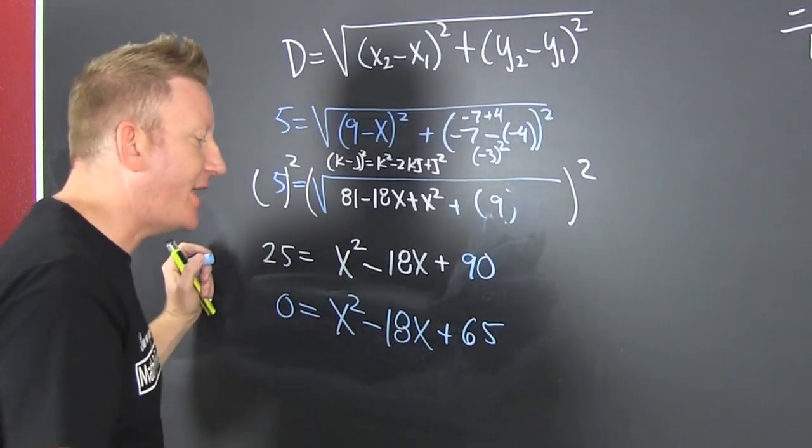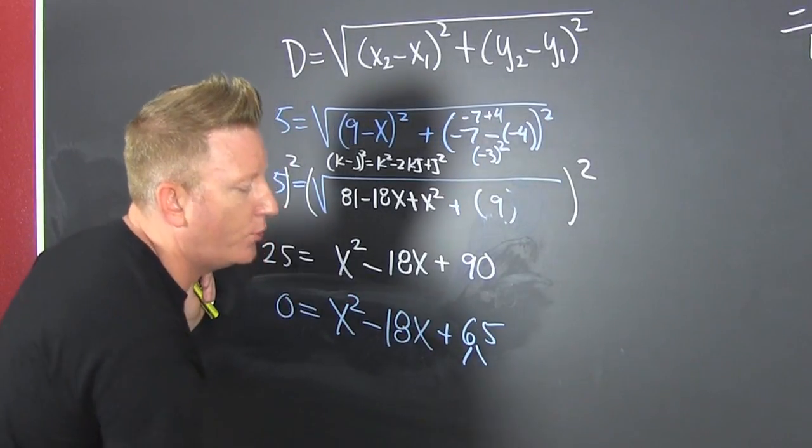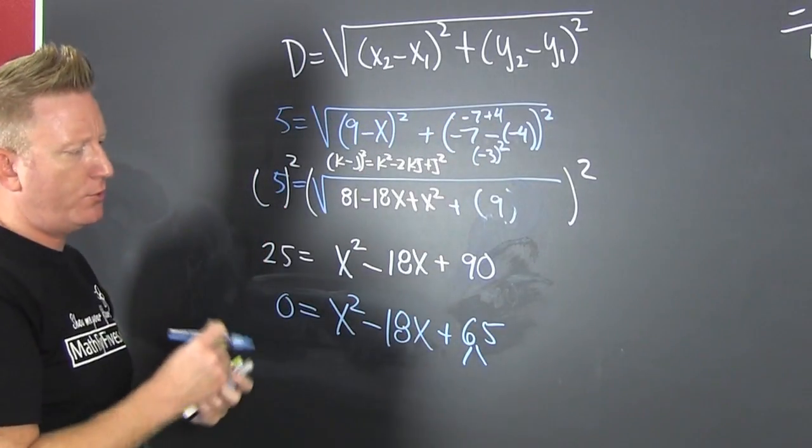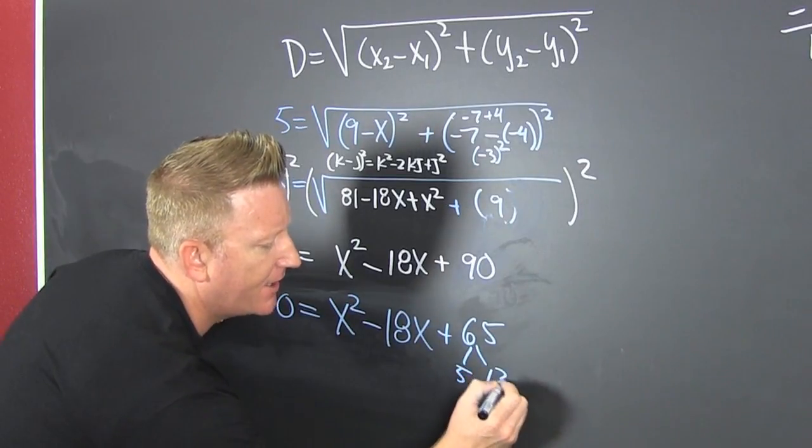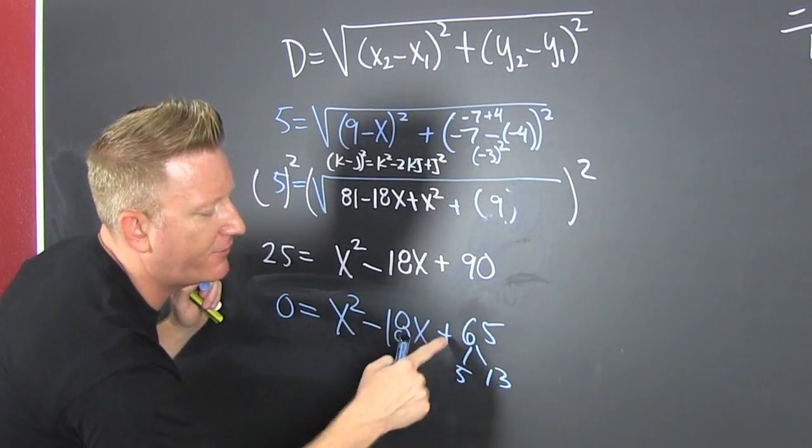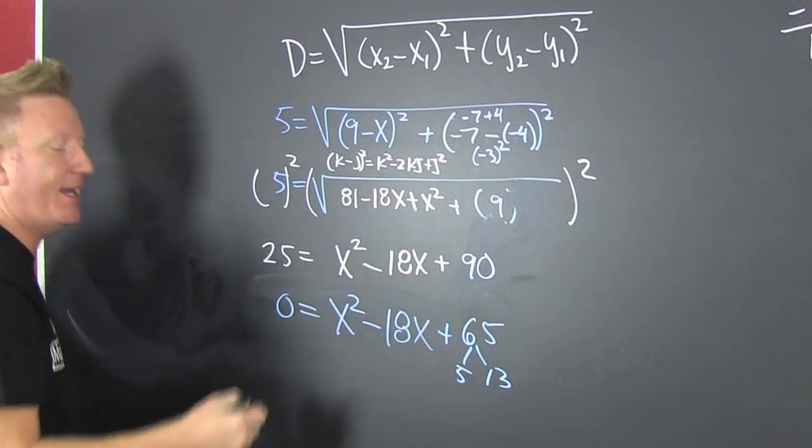So, then zero is equal to an X squared minus an 18X. And then 90 minus 25 is a positive 65. Now, you're looking for the factors of 65 that add to be 18. Oh, I think that's a five and a 13. Check it. That's a five. Carry a one. It's okay. It's not heavy. Yeah. Okay, good. Those add to be 18.